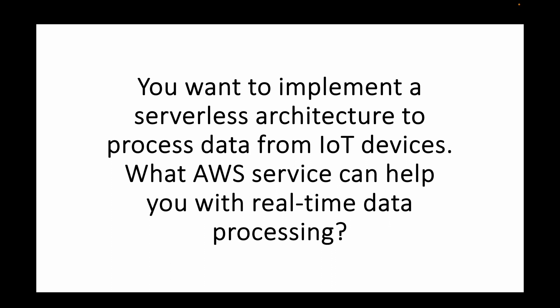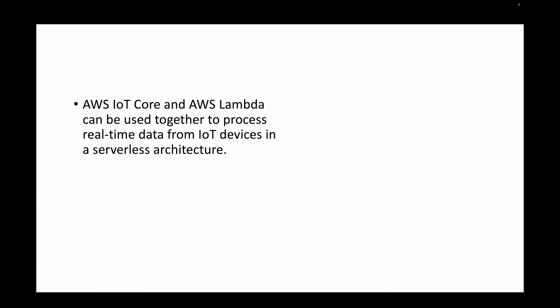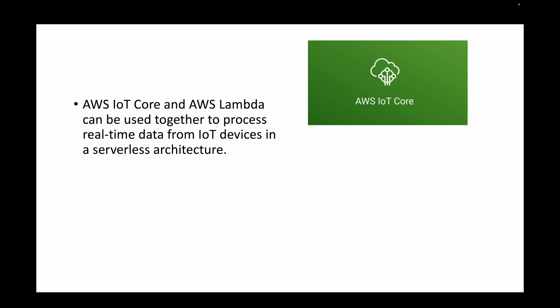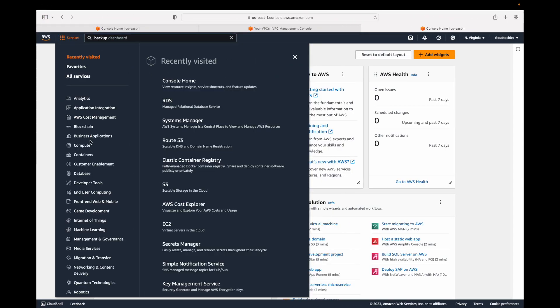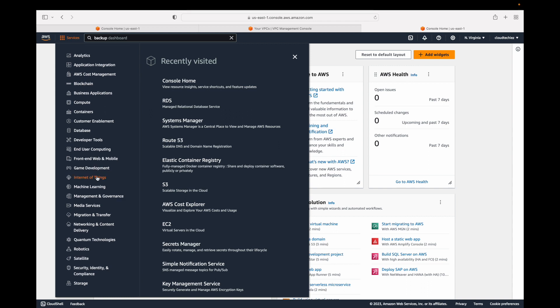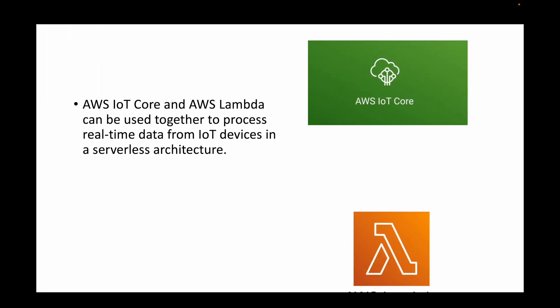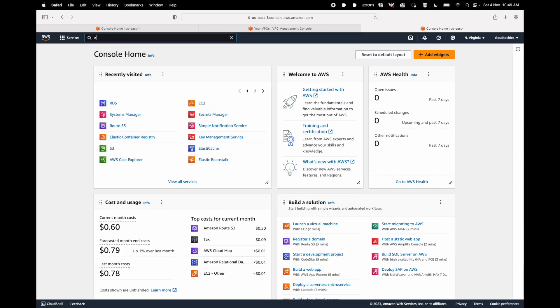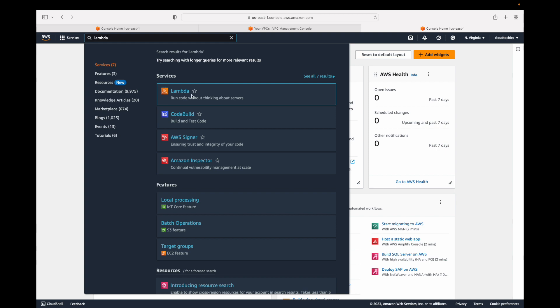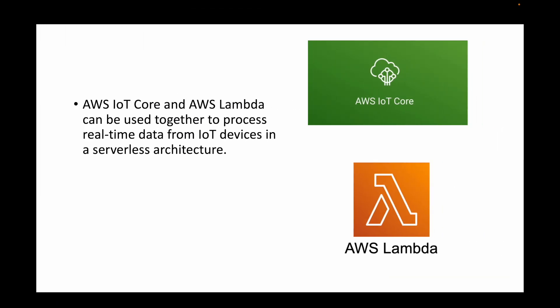The next question is: you want to implement a serverless architecture to process data from IoT devices — which AWS service can help you with real-time data processing? AWS IoT Core and AWS Lambda can be used together to process real-time data from IoT devices, providing a serverless architecture. We can implement IoT Core — available under the IoT services in the AWS console — combined with Lambda, to process huge amounts of data efficiently.